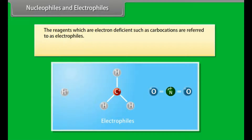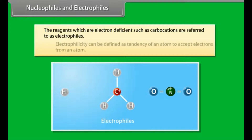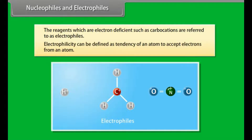The reagents which are electron deficient, such as carbocations, are referred to as electrophiles. Electrophilicity can be defined as the tendency of an atom to accept electrons from another atom.